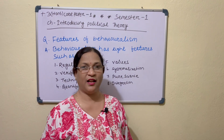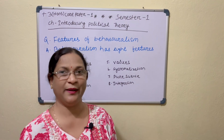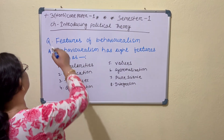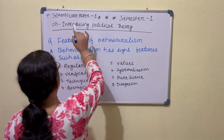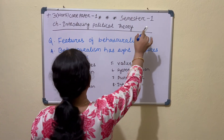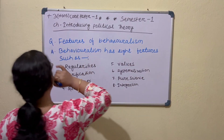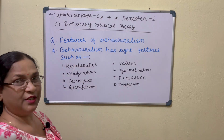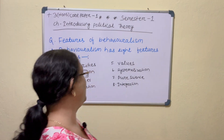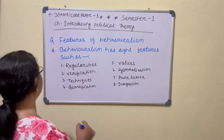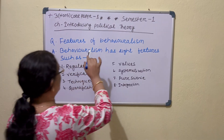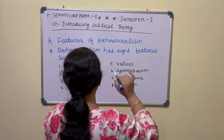Hi students, I am your Geeta ma'am. This is plus 3 honors core paper 1, semester 1. Your chapter is Introducing Political Theory. Let's start our class. Your question is: Features of Behaviorism.